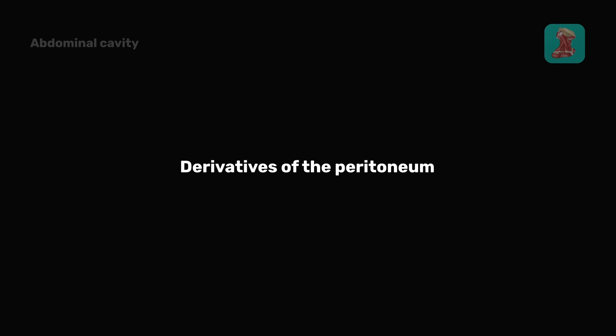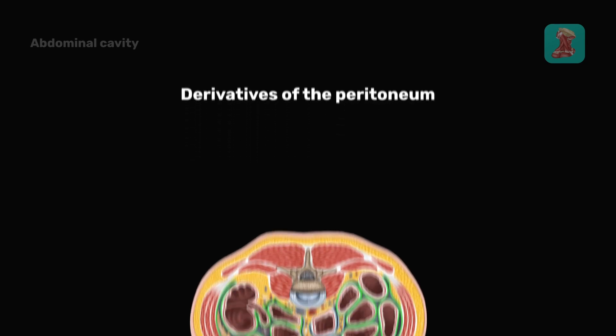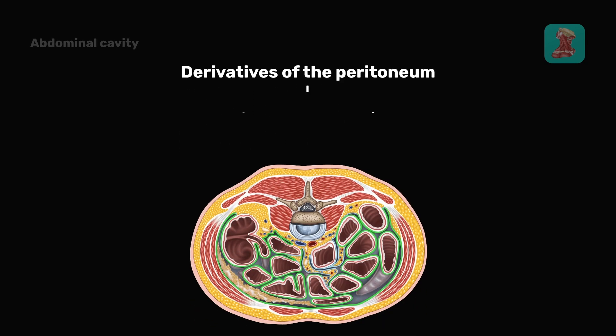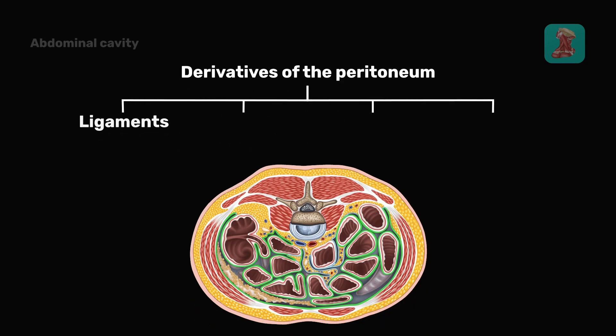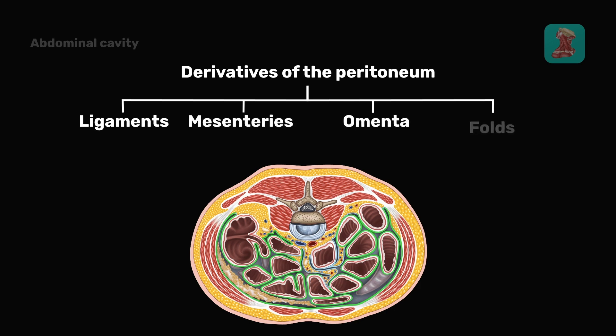Let us examine a number of derivatives of the peritoneum: ligaments of the peritoneum, mesenteries, omenta, and folds.